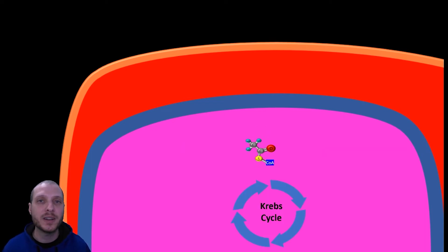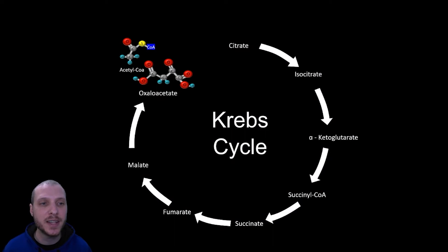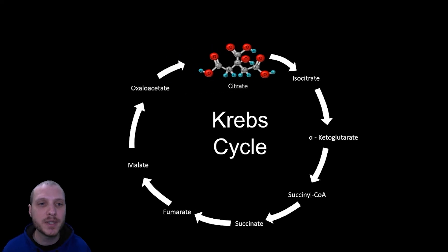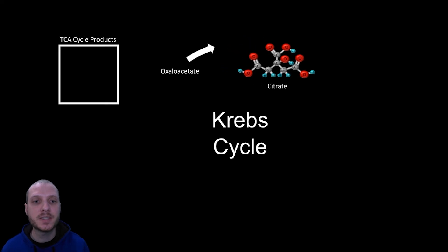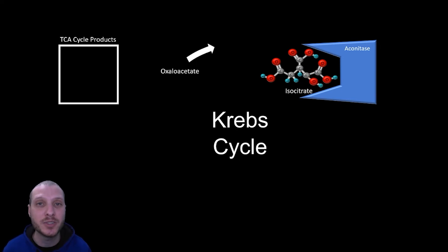Now acetyl-CoA is ready to enter the Krebs cycle. It interacts with oxaloacetate, and in the presence of an enzyme known as citrate synthase, all these atoms combine to form a large molecule called citrate — hence the name citric acid cycle. Citrate then continues through the cycle and interacts with an enzyme called aconitase. Enzymes are structures designed to speed up and optimize chemical reactions. Aconitase shuffles around a couple of atoms and turns citrate into a molecule called isocitrate.